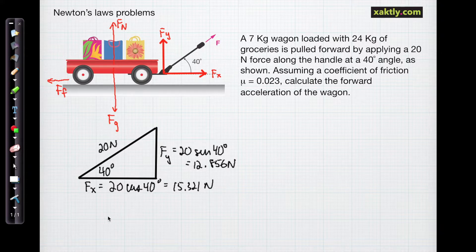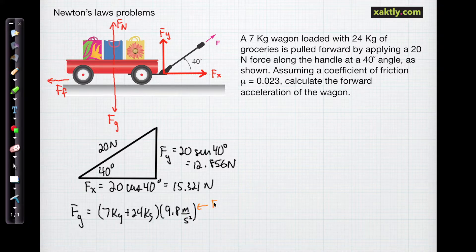We're not finished calculating our basic forces. First we need the force of gravity, and that's going to be the mass of the wagon plus its contents, so that's 7 plus 24 kilograms, and that's all times the acceleration of gravity, 9.8 meters per second squared. That's just f equals ma, Newton's second law.